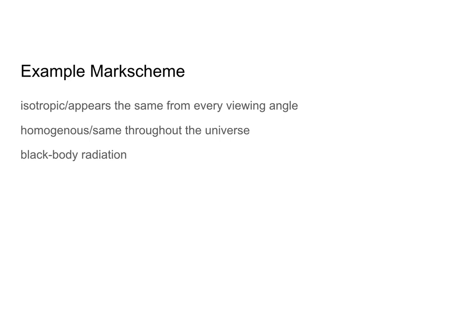Here is our example mark scheme. You'll notice there are three points here, and the question is only two marks, so as long as you list two of these three things, you should give yourself full marks. First, you should have said either that the CMB is isotropic, or that it appears the same from every viewing angle. You should also have said that it was homogeneous — that is to say, the CMB is the same throughout the universe. And you should have said that it emits black body radiation. As long as you have two of those three things, give yourself two out of two. If not, make yourself a flashcard answering this question, because this is one of the most common questions on Paper 3 for your exam.